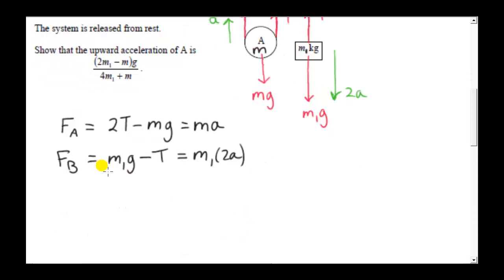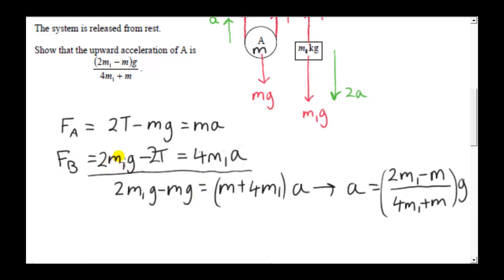To solve this system, multiply the second equation by 2 so it becomes 4A, then add both equations to cancel the T terms and solve for A. This gives a general formula for the acceleration of this kind of system.